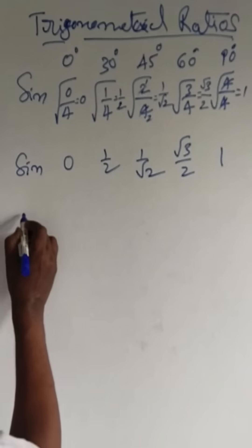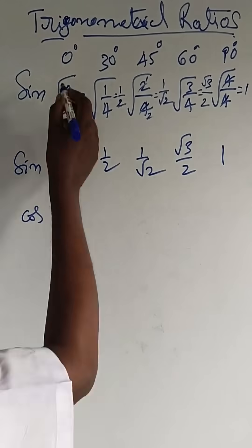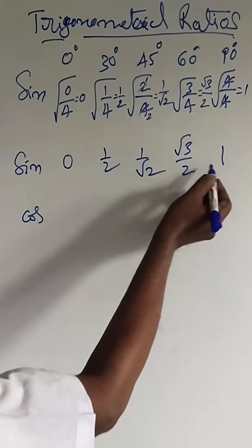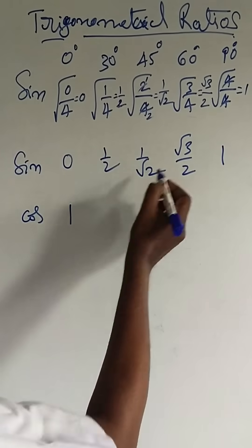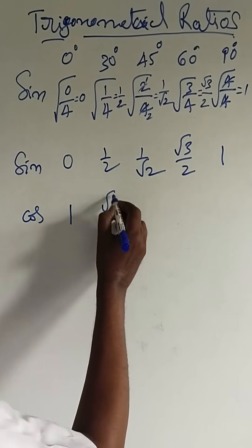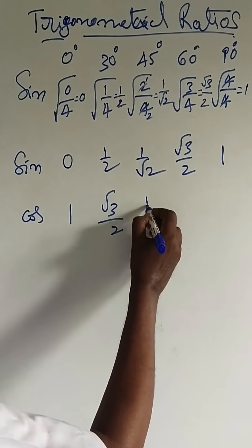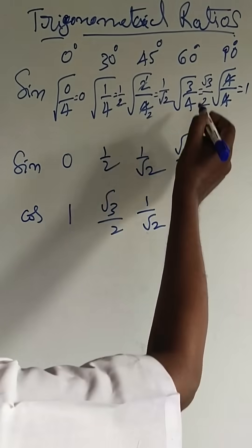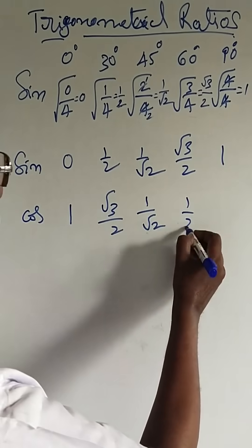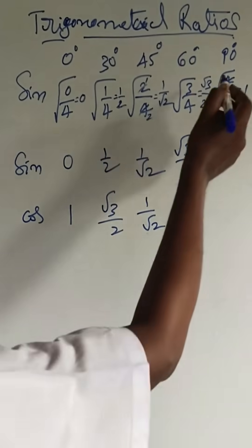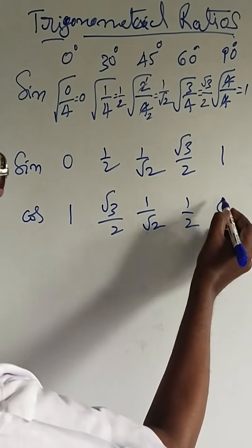Next, cos. Simply reverse the sin values. Cos 0 is equal to 1, cos 30 is equal to root 3 by 2, cos 45 is equal to 1 by root 2, cos 60 is equal to 1 by 2, cos 90 is equal to 0.